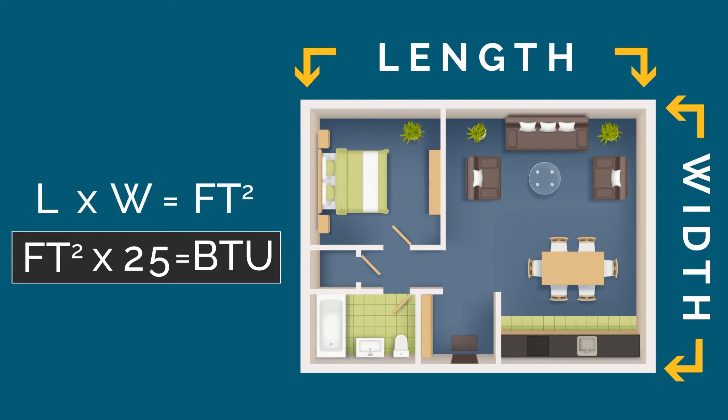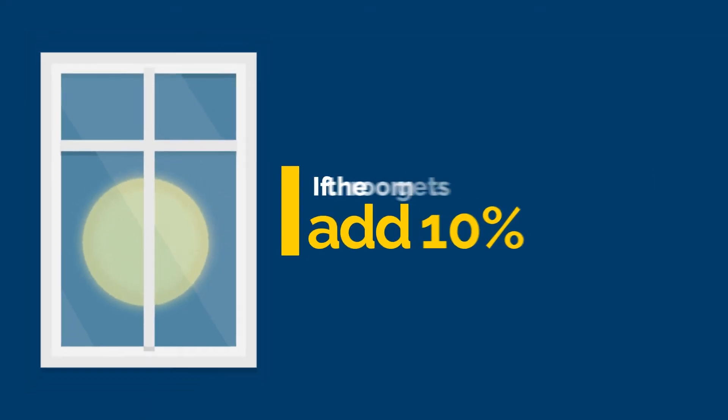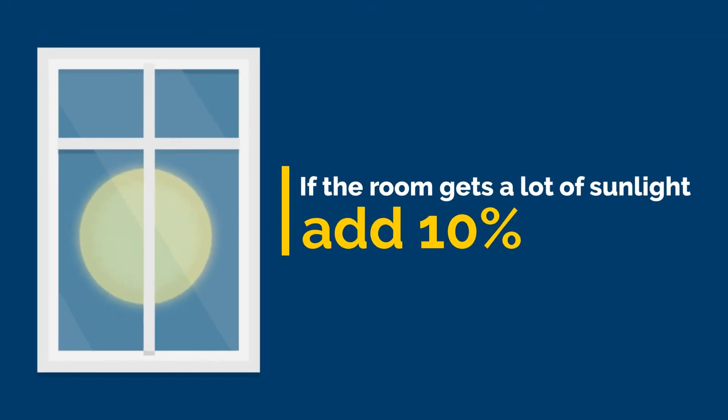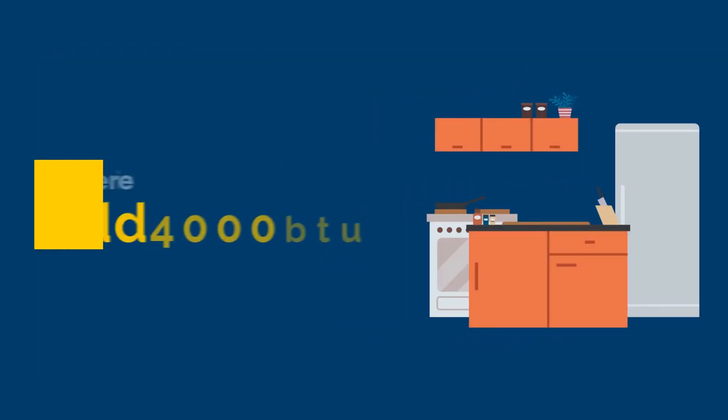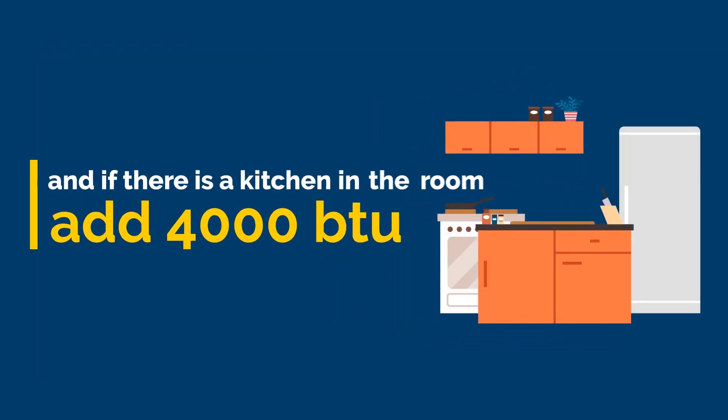Now take into consideration: if the room gets a lot of sunlight, add 10%; and if there is a kitchen in the room, add 4000 BTU.